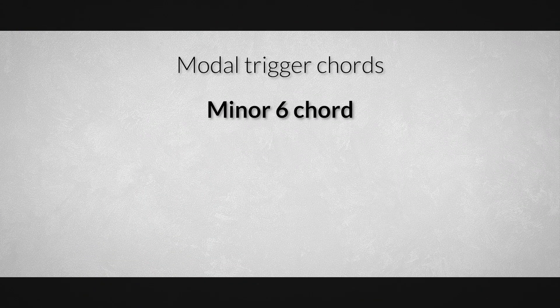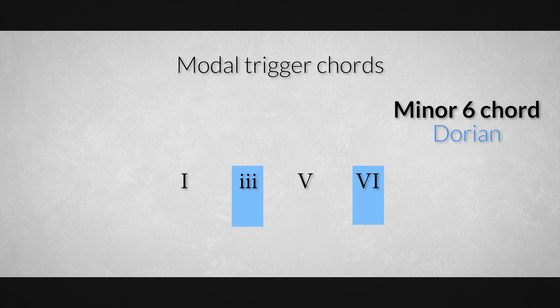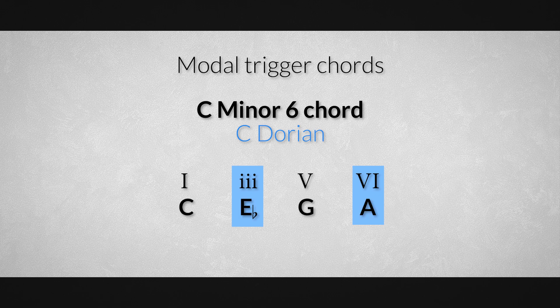We could assume that every scale and therefore every mode can be represented by a specific chord that bears at least two of the characteristics of the scale or mode we are dealing with. One of the best examples is a minor sixth chord, which bears two characteristic notes of the Dorian mode: it has a minor third and a major sixth degree. So the C minor sixth chord containing the notes C, E flat, G, and A outlines C Dorian mode — where E flat is the minor third establishing a minor family chord, and A is the major sixth, which is the raised sixth degree in a minor scale, resulting in a C Dorian sound.